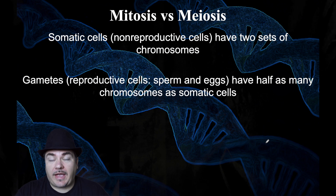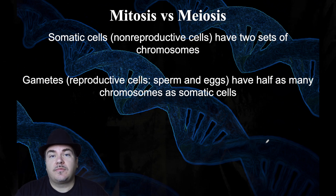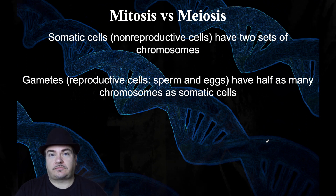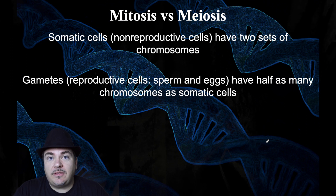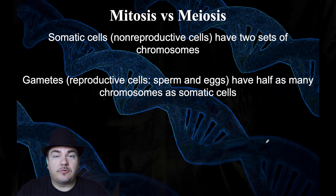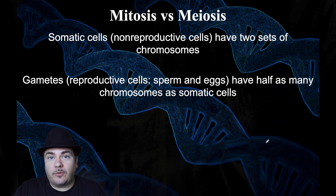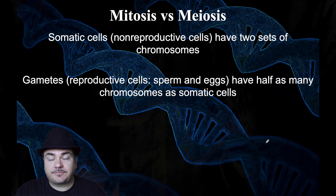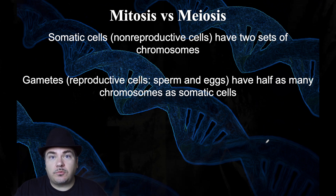There are two different categories of cells in your body: the non-reproductive cells and the reproductive cells. The non-reproductive cells are called somatic cells. In humans, somatic cells have 46 chromosomes — more specifically, 23 pairs of chromosomes, meaning 23 different types with two of each. You have two chromosome 1s, two chromosome 2s, two chromosome 3s, etc., giving you 46 total chromosomes in your somatic cells. The other type of cells are the gametes — the reproductive cells, the sperm cell and the egg cell — which have half as many chromosomes as somatic cells.